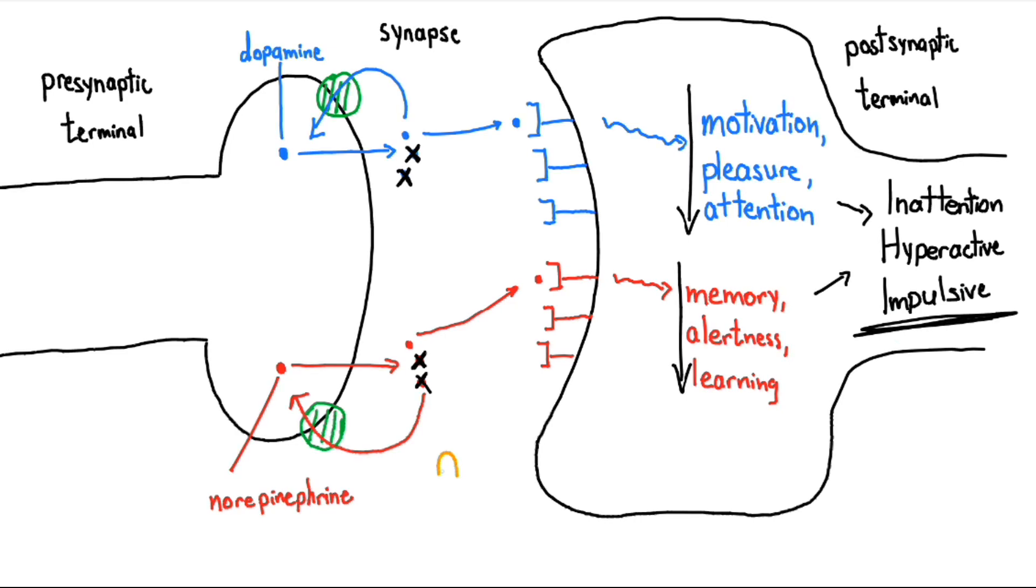Now, with stimulant medications, methylphenidate, or Ritalin, acts to block the reuptake of these neurotransmitters back into the presynaptic neuron. So, more dopamine and more norepinephrine remain in the synapse for a longer time.